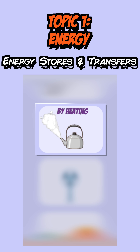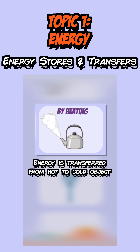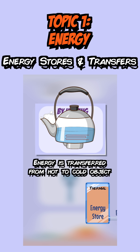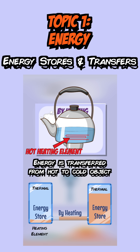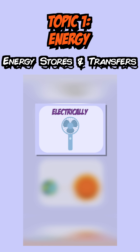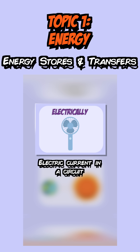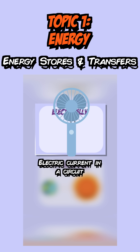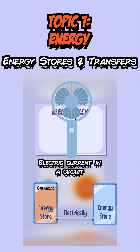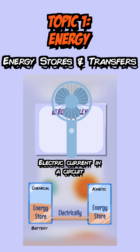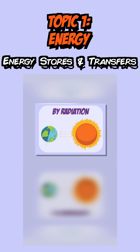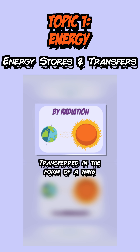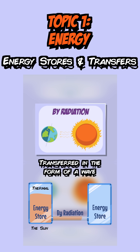The second is by heating, which is where energy is transferred from a hot object to a colder one. For example, when a kettle heats water, energy is transferred from the thermal energy stores of the kettle's heating element to the thermal energy store of the water. The third type is by electric work, where current flows in a circuit and transfers energy — like an electric fan transferring energy from its chemical energy stores in the battery to the kinetic energy stores of the fan blades. And finally, we have energy transfer by radiation, where energy is transferred in the form of a wave, just like how the sun transfers thermal energy to the earth.